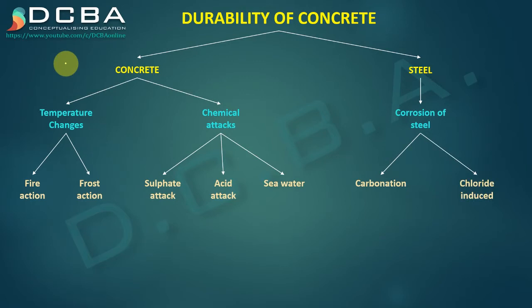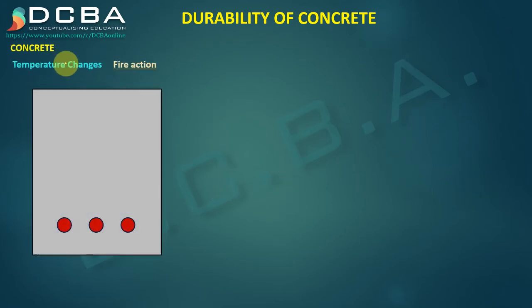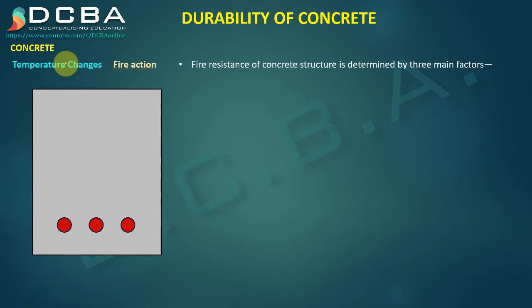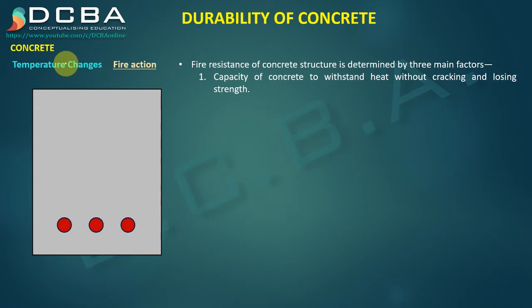Under temperature changes, let us start with fire action. Fire action means subjecting concrete to extreme high temperatures. Fire resistance of a concrete structure is determined by three main factors. The first is the capacity of concrete to withstand heat without cracking and losing strength. The second is the conductivity of concrete to heat — that is, how fast heat can travel through the body of concrete.